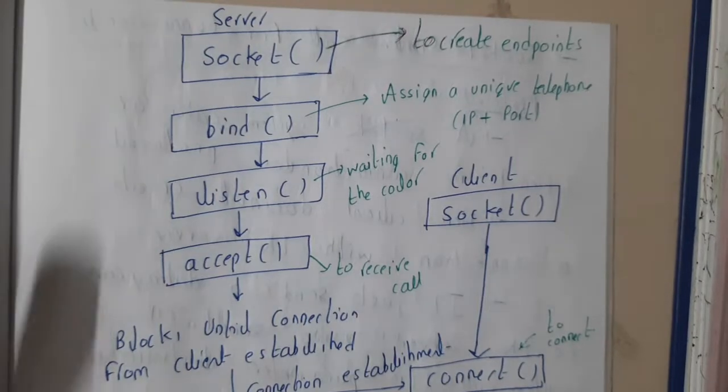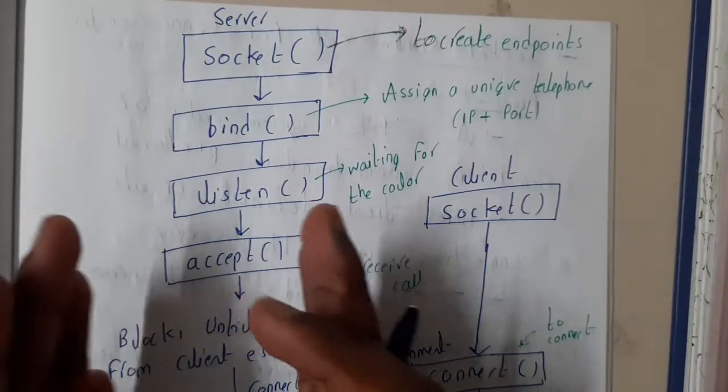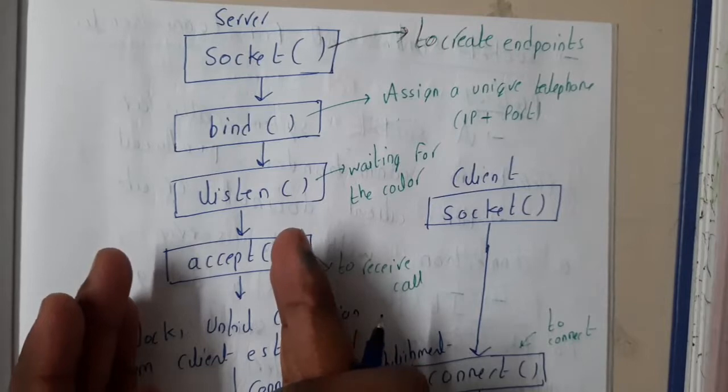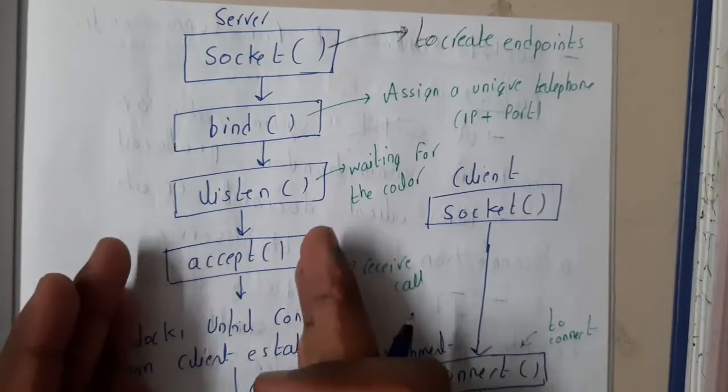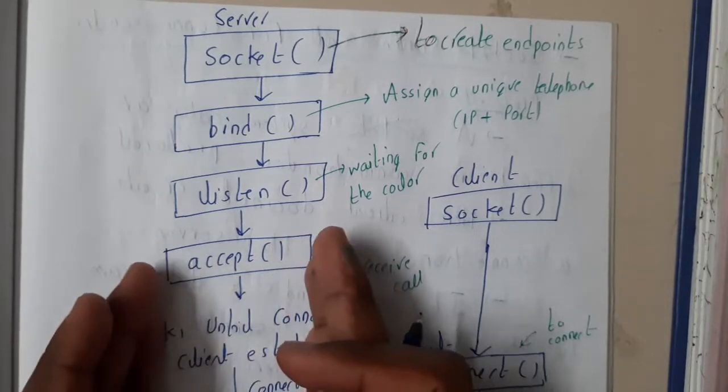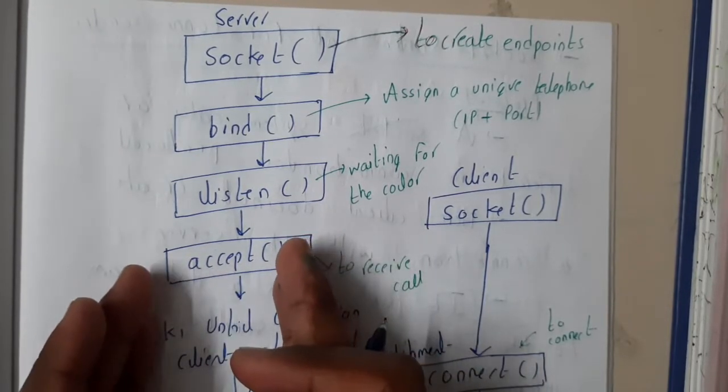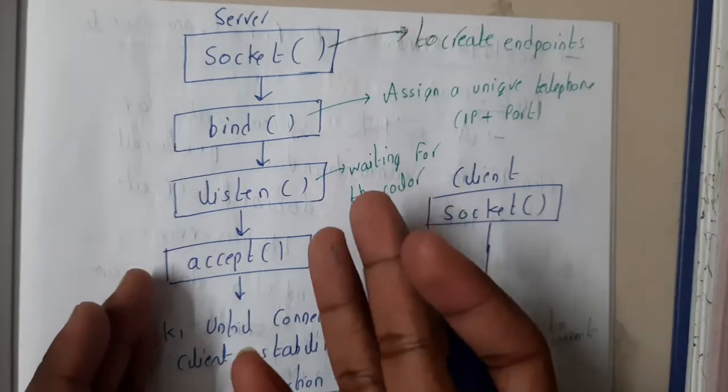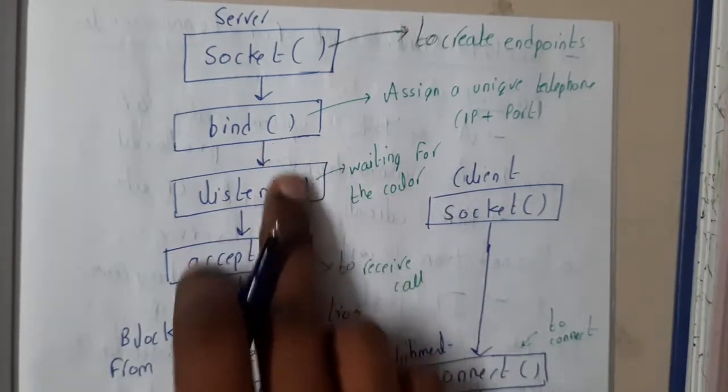Initially we know that the server is the 24 by 7 online system, right? The server is a device or a computer which will be 24 by 7 online or active, and it is just waiting for some kind of request to respond back. It is always in the listen state.